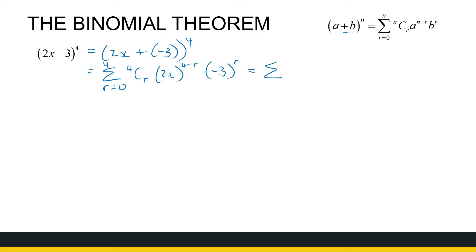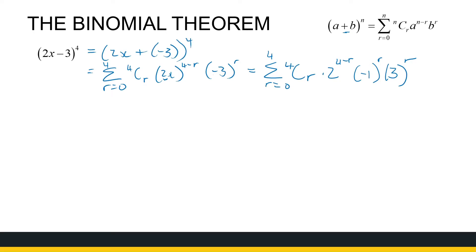Let's tidy up the expansion before writing out the five terms. By 'tidy up' I mean get all the numbers together and all the variables together. We have 4Cr, then 2^(4-r) times x^(4-r), and (-3)^r can be written as (-1)^r times 3^r. It's useful to remember that a minus can be seen as minus 1. The coefficient of every term combines these, and there are x^(4-r) factors.